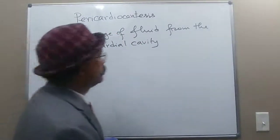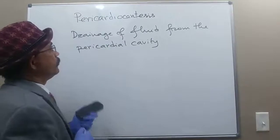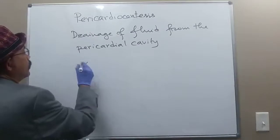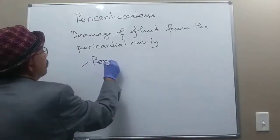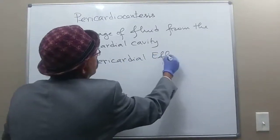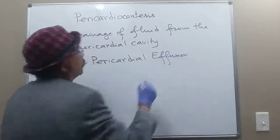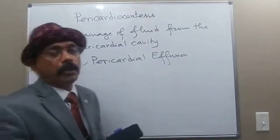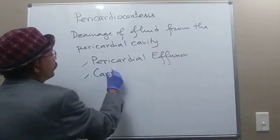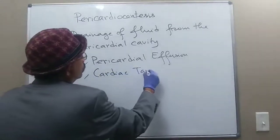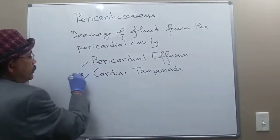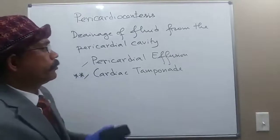What are the indications? Pericardiocentesis is essential to drain the fluid from the pericardial cavity in case of pericardial effusion — that is, collection of fluid in the pericardial cavity. It is also indicated in case of cardiac tamponade, which is very essential and should be done very quickly.